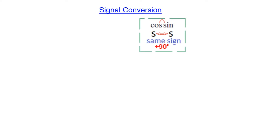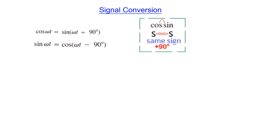To recall: to convert from cosine to sine we use the same positive sign, and from sine to cosine we use negative 90 degrees. So cos(ωt) converted to sin(ωt) requires adding 90 degrees, and sin(ωt) converted to cos(ωt) requires subtracting 90 degrees. In this chapter we will mostly use sine to cosine, so remember: sine to cosine is minus 90 degrees.